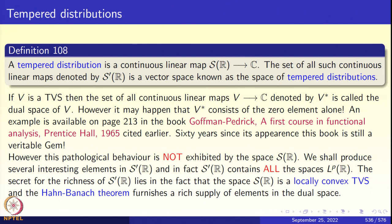If V is a topological vector space, the set of all continuous linear transformations from V to C is V*, called the dual of V. However, it may happen that V* consists only of the zero element. Of course the zero map is always a continuous linear transformation, but it may be the only one. Such examples exist — one is on page 213 of Goffman and Pedrick, published by Prentice Hall in 1965. That book, sixty years old, still remains a gem with highly non-trivial theorems.